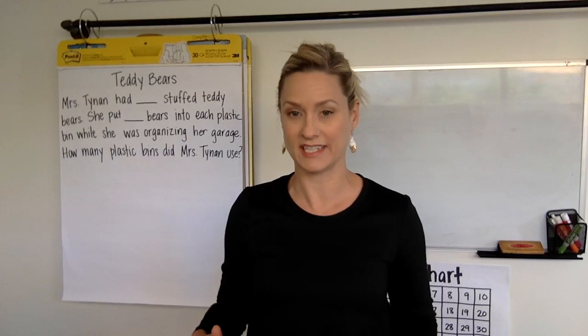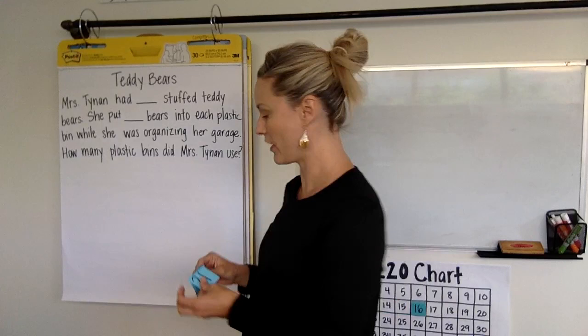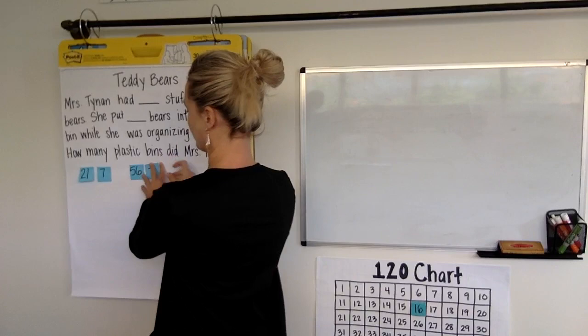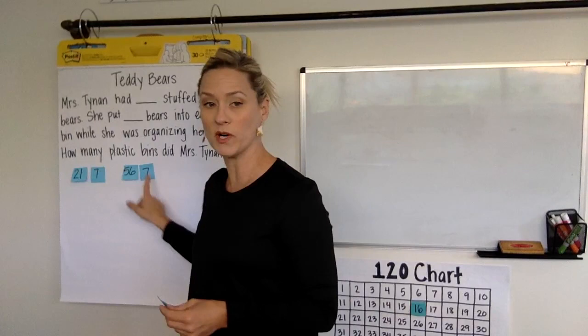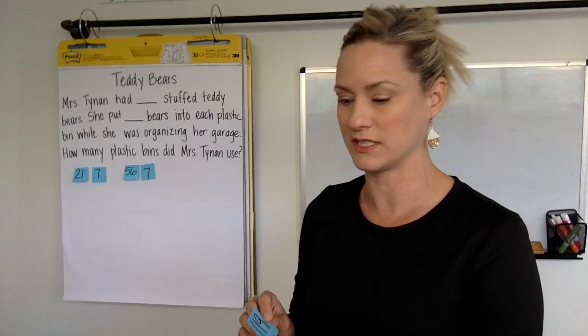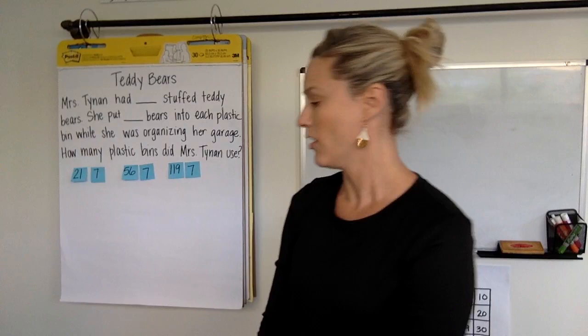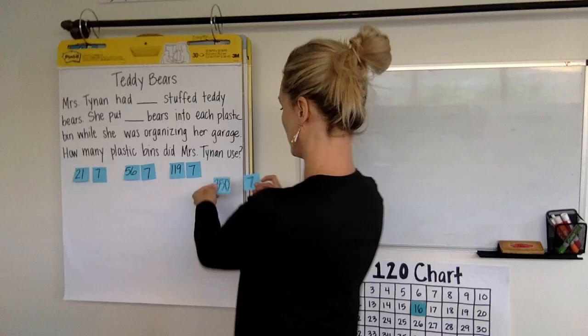Alright, let's check out our just right number sets. Are you ready? Your just right number set might be 21 and 7, or it might be 56 and 7. I want you to make sure to try one of these number sets first before you try one of these bonus ones. So here's a real big challenge: 119 and 7. Whoa that's a tough one, or holy moly, 350 and 7. That's a toughie.